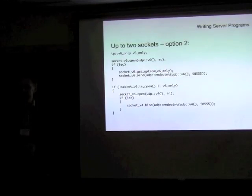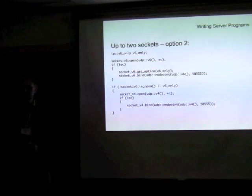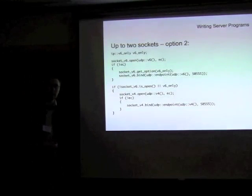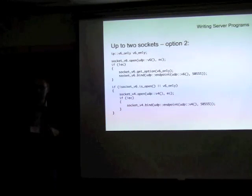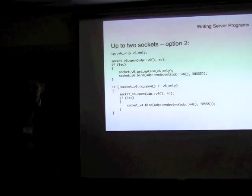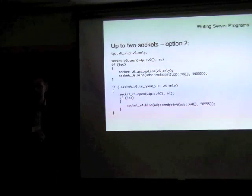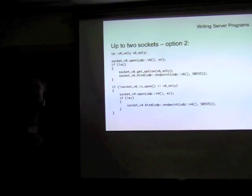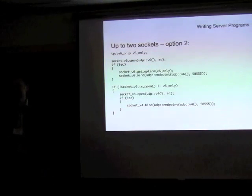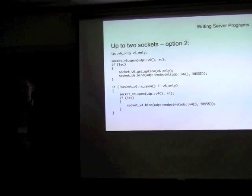On the question of privacy extensions occasionally generating new addresses on a network interface and whether that affects servers: if you're using the any addresses then you should be fine. There are sometimes good reasons for listening on a specific interface rather than all interfaces, so it's not a blanket rule — it depends on the sort of system you're deploying on. Any more questions? Well, thank you very much.